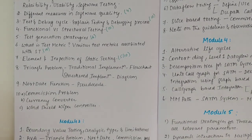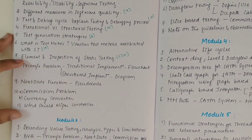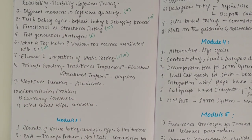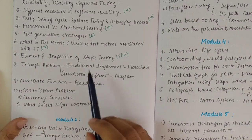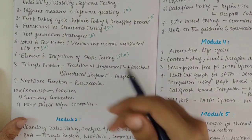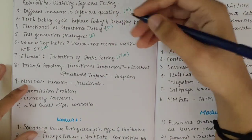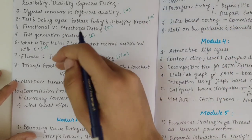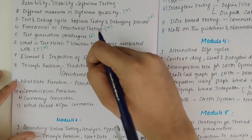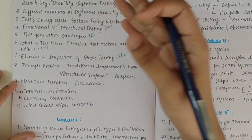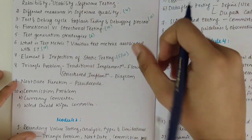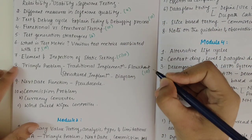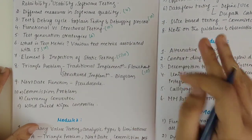Then the main part: out of these, one question would definitely be asked. The triangle problem is a must. Make sure you know the traditional implementation — the lengthy code — along with the flowchart. This could be asked for 10 marks, or the structural implementation, which is the shorter version with a diagram. Out of these two, one will definitely be there.